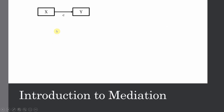Now, have a look here. This C actually represents the relationship between X and Y, and this is the total effect. Why? Because there is no other variable in the model, and the effect of X on Y can be referred to as the total effect.